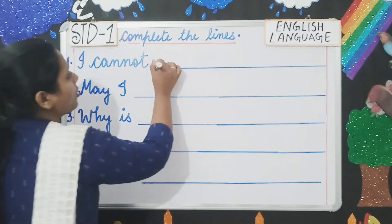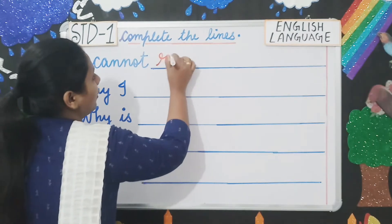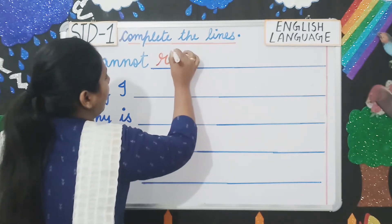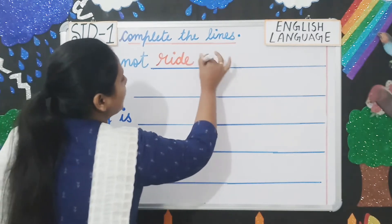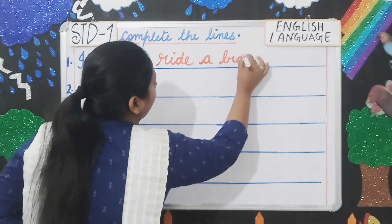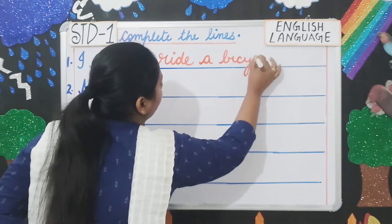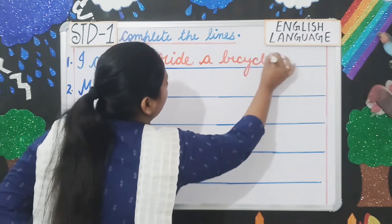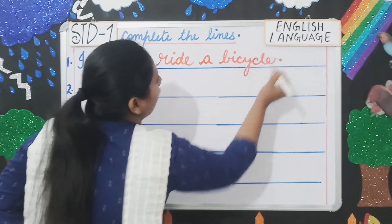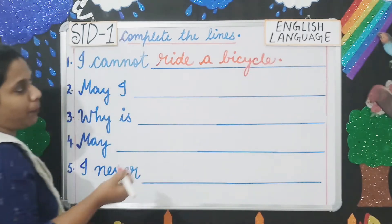So you write: 'I cannot ride a bicycle.' And then you have to put a full stop at the end.